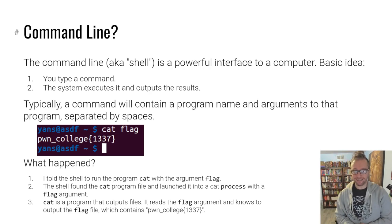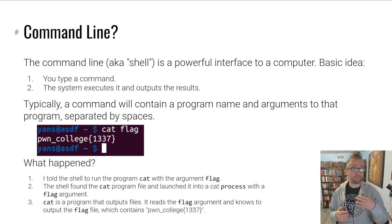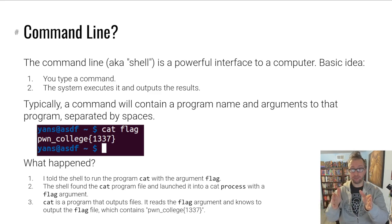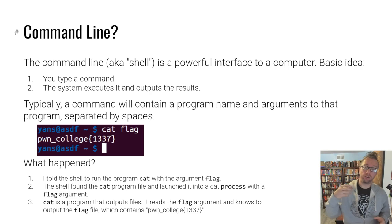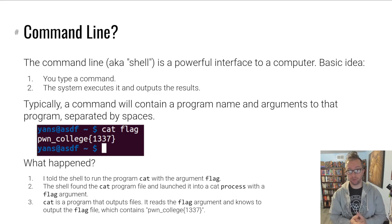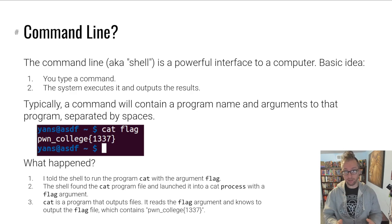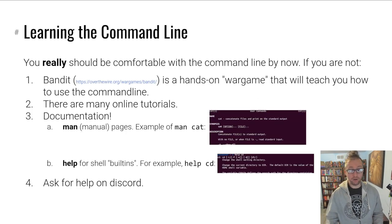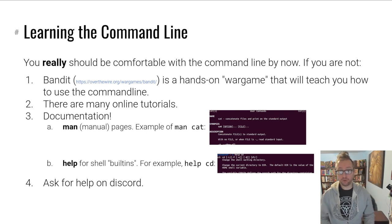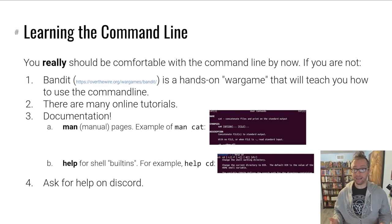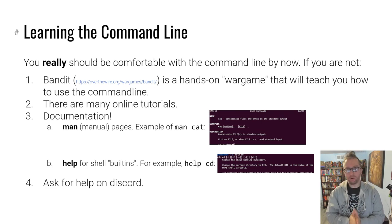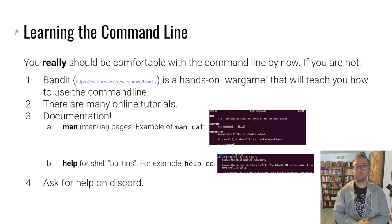What happens is the shell sees that it wants to run the cat program with a flag argument. The process that results from the invocation of cat flag reads its first argument, which is flag, opens that file, and prints it to standard output — to the output of the terminal. That's what cat is designed to do: it reads out files.